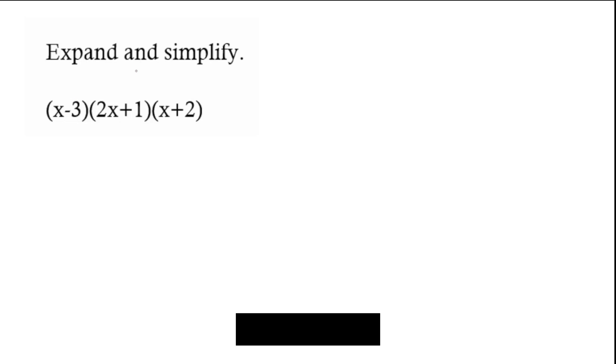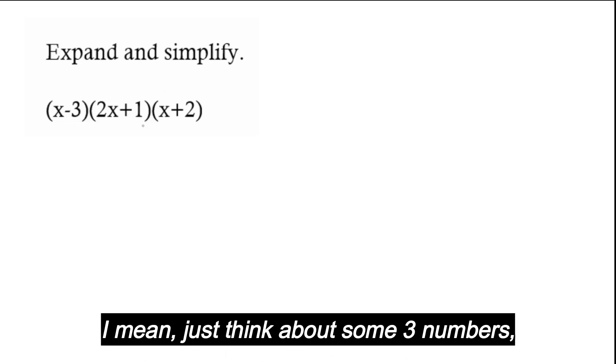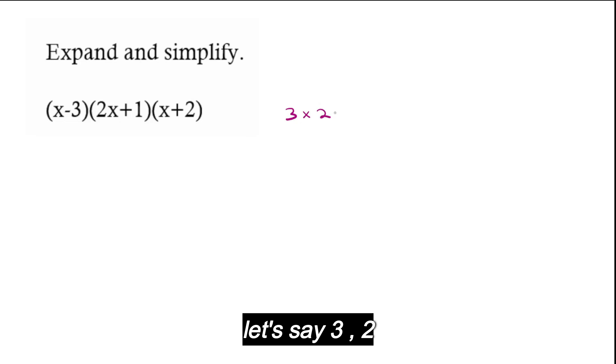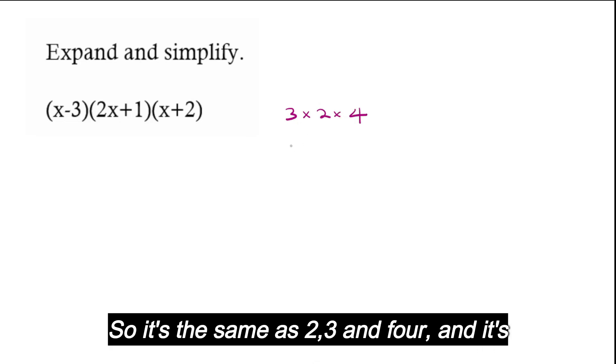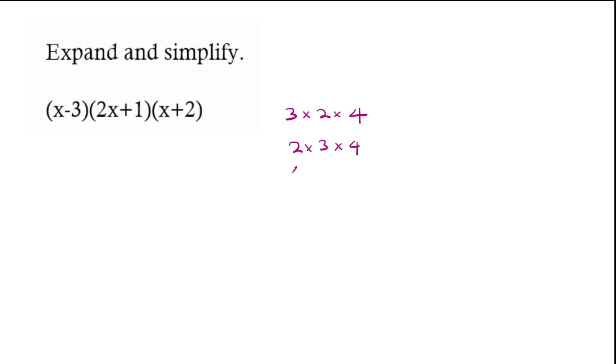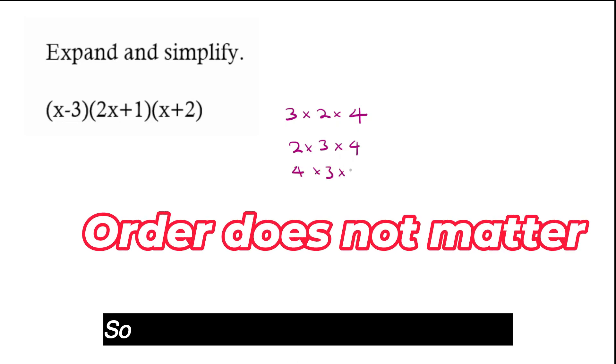Let's have a look. Now in a question like this, there is no exact order in which you need to multiply these. I mean, just think about some three numbers, let's say 3, 2, and 4. So it's the same as 2, 3, and 4, and it's the same as 4, 3, and 2.